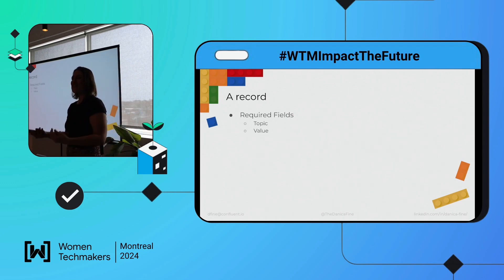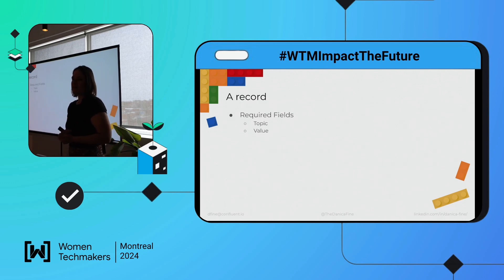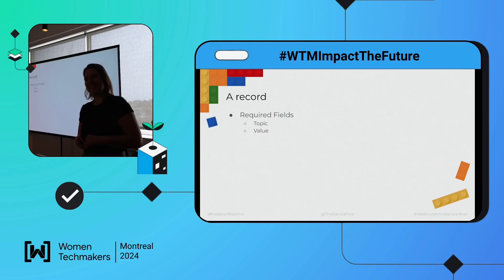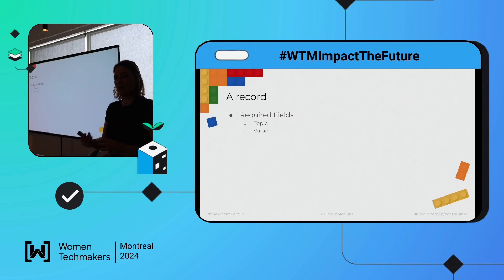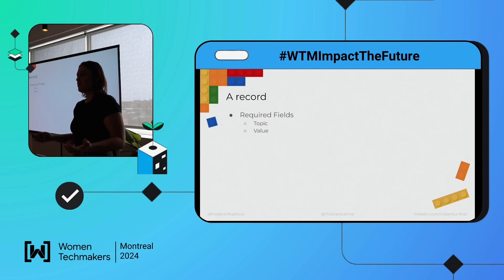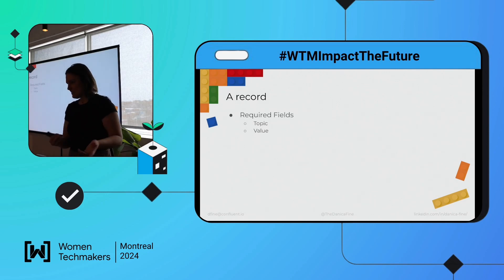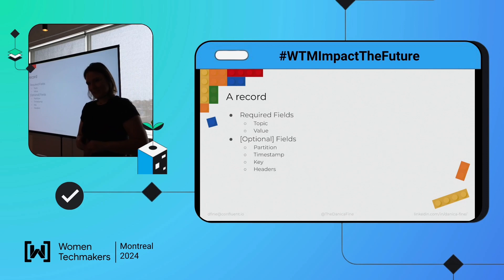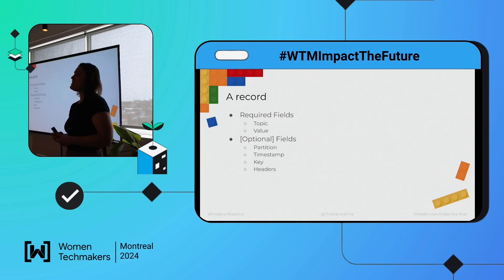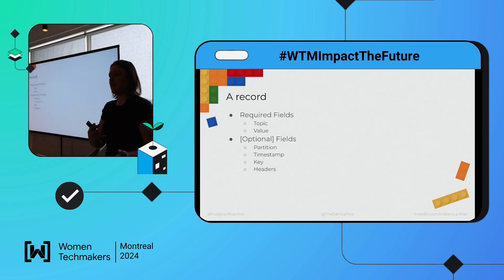Now we understand where data is stored and how it's stored. Let's look at how we actually build up records — how we format events to get them into Kafka. As far as required fields: pretty minimal. All we need to know is what topic we want to store the data in, and what the piece of data is. That's it — you can start putting it to Kafka. The value is the event itself. Optional fields include: the specific partition you want to store the data on, if you're doing your own hashing.